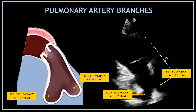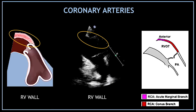Then the main pulmonary artery divides in two and we can find the pulmonary artery branches. On the left hand side you can see the right pulmonary artery, and on the right hand side you can see the left pulmonary artery. To finalize, in this view you can visualize a small segment of the right ventricular wall, where you can find the coronary arteries in charge of supplying blood to this segment.